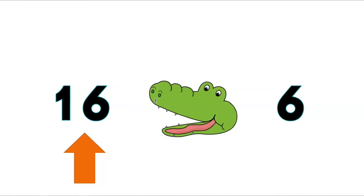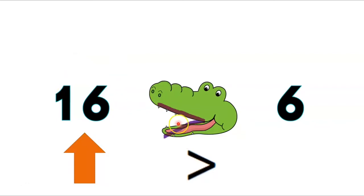To help Mr. Alligator munch, we need to find the biggest number. We have the number 16 and we have the number 6 — which one is the biggest? That's right, 16 is the biggest number. Mr. Alligator is going to want to eat 16, so his mouth is open ready to eat number 16. We would read this like: 16 is greater than 6.